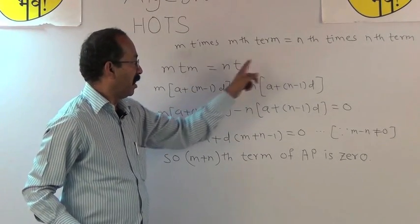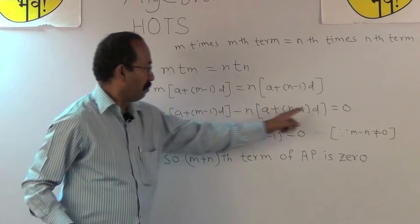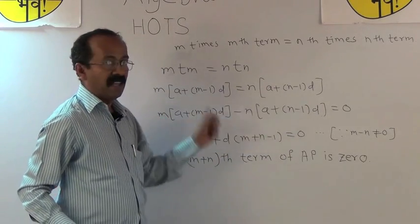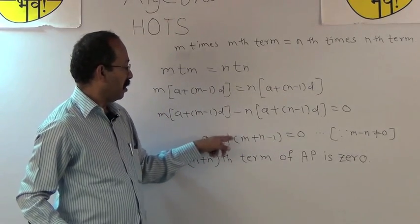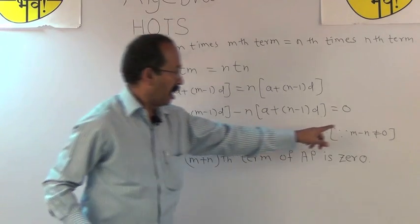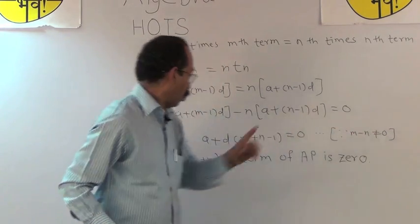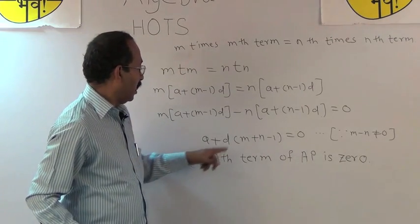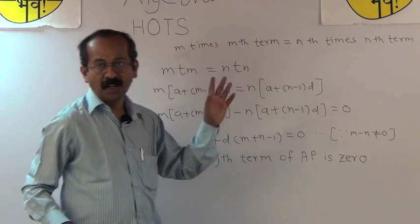After shifting this term on the left hand side, we get this term. Now after simplifying this term, we get a plus d times bracket m plus n minus 1 equals 0. m minus n is not equal to 0. So the m plus n term of AP is 0, which is proved.